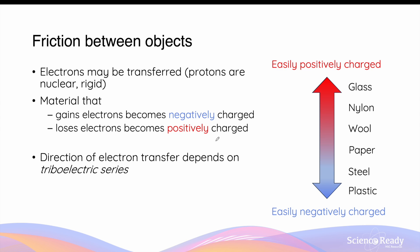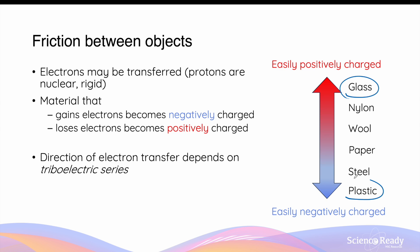During electron transfer, the material that gains electrons becomes negatively charged due to an excess of negative electrons, while the object that loses electrons becomes positively charged as it becomes electron deficient. The direction of transfer depends on the triboelectric series, which lists materials in order of their tendency to gain or lose electrons. Materials at the top more easily lose electrons and become positive; those at the bottom more easily gain electrons and become negative. For example, glass tends to lose electrons and become positively charged, while plastic tends to gain electrons and become negatively charged.